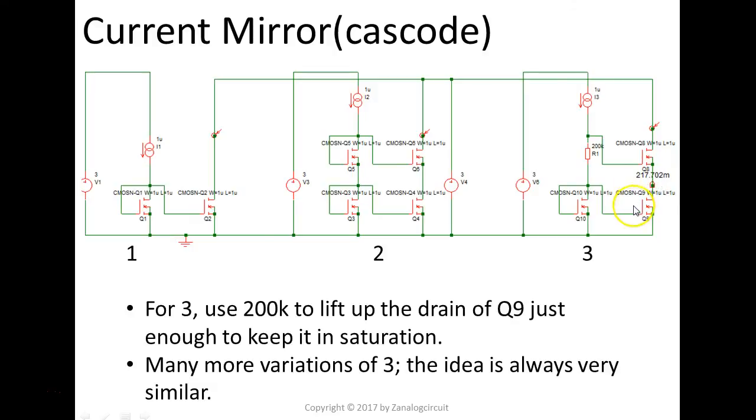Essentially, we try to bias the drain of this Q9 here at 0.2 volts. It just keeps this Q9 transistor right at the brink of its saturation region. Since right now the drain of this Q9 is at 0.2 volts, the minimum voltage at this node so that this Q8 could be in saturation is 0.2 plus 0.2, that's 0.4 volts. That's improvement from this topology. This topology is about VGS plus 0.2 volts.